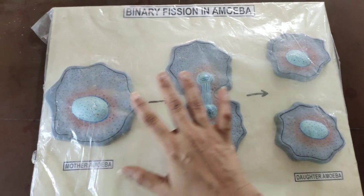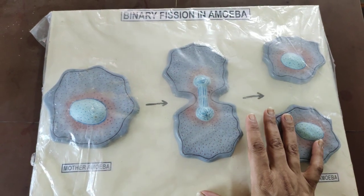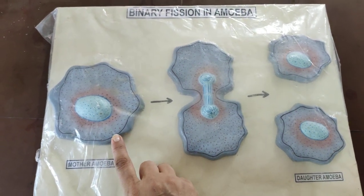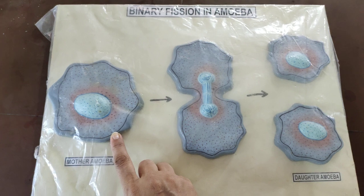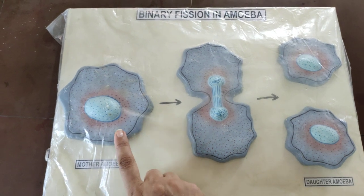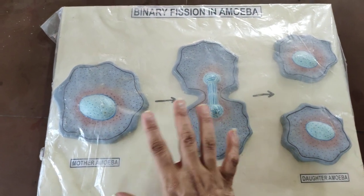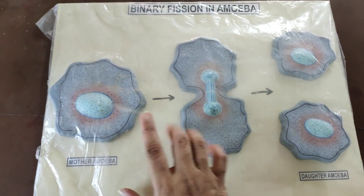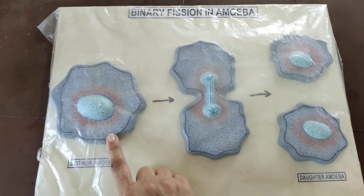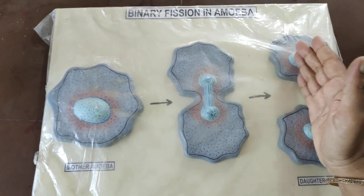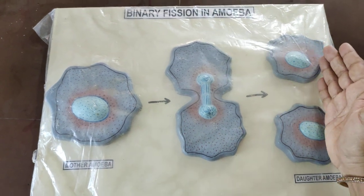Hello everyone, today I am going to show you how the amoeba, a unicellular organism, reproduce. So in amoeba, the reproduction is asexual, means only one parent is involved in forming two daughter cells.